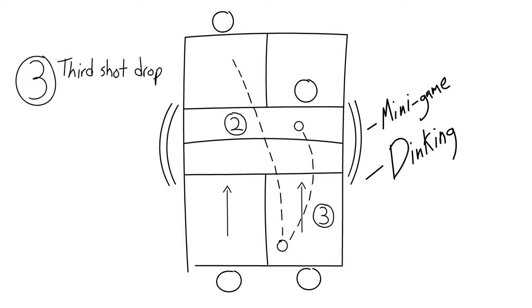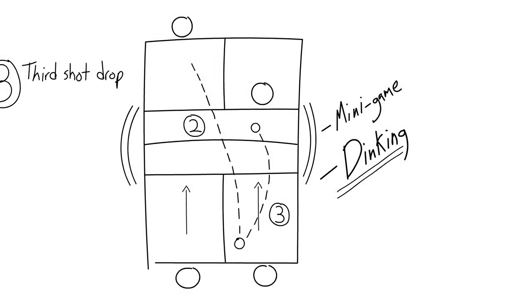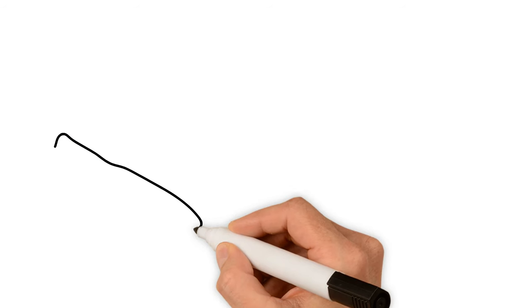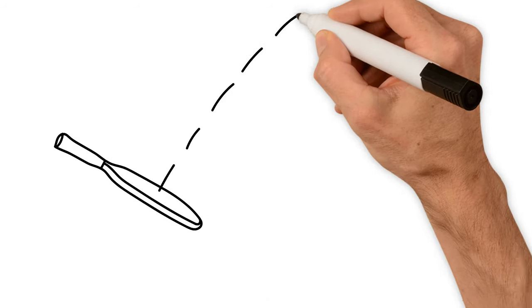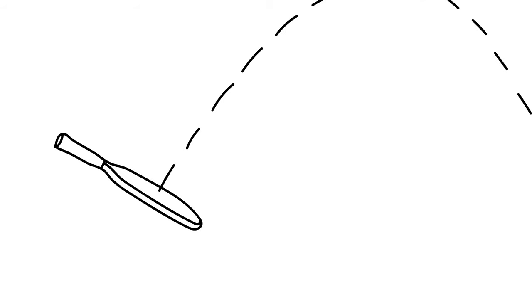Once again, this is where all the players in the game want to be. A dink is exactly what it sounds like, a very soft shot. This is the part of the game that requires a great deal of patience. This is where it gets fun.